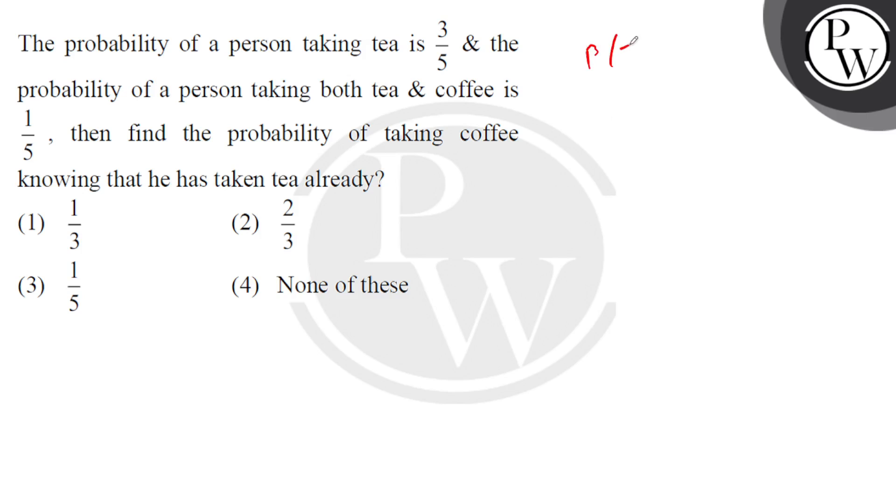So basically if we see here, P of T we have given in the question as 3/5, and P of T intersection C we have given as 1/5.